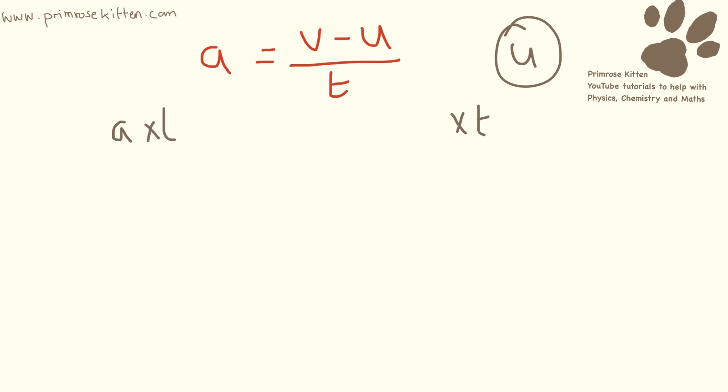So we have A times T equals V minus U. U is currently being taken away from V. V is on the right hand side. We need it on the left hand side.